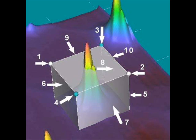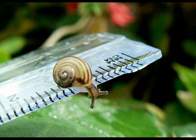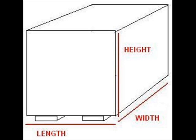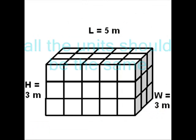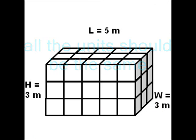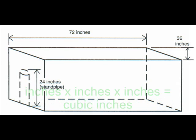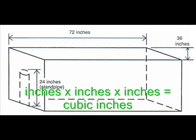If you need the volume of any rectangular shape that looks like your room, come on, measure it my way. Just get the length, width, and height — yeah, all the units should be the same. Multiply and then call them cubic, like cubic inches you'd say.